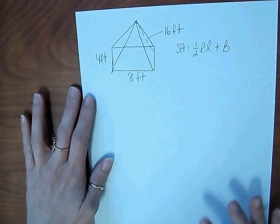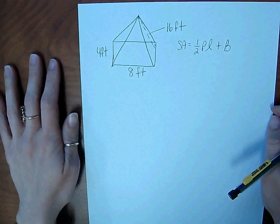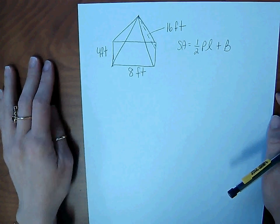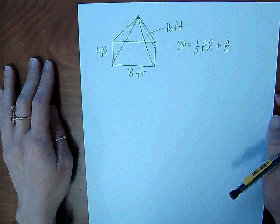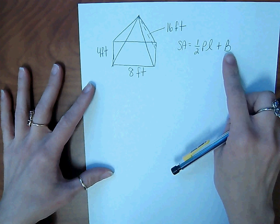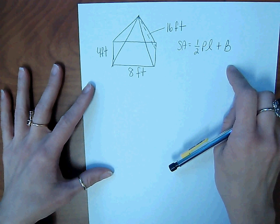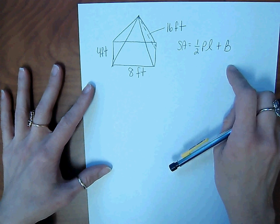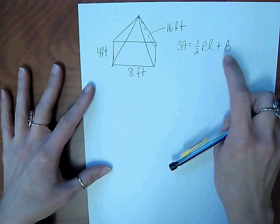Now, I'm a big fan of formulas because they're very easy. You plug in what you know and solve for what you don't know. However, in this formula, the P and the big B are not given to you in the picture. They are things that you are going to need to figure out before you get ready to plug it into the formula.